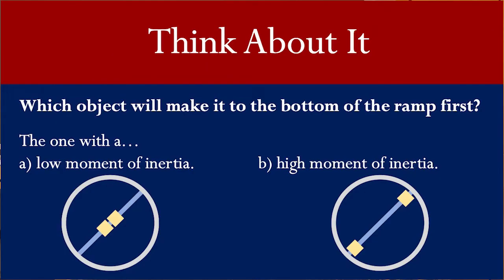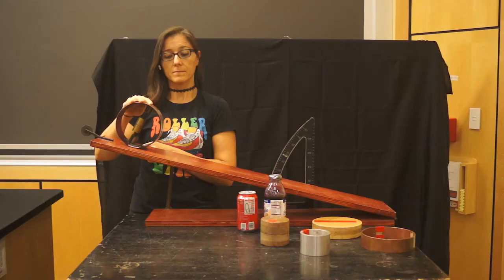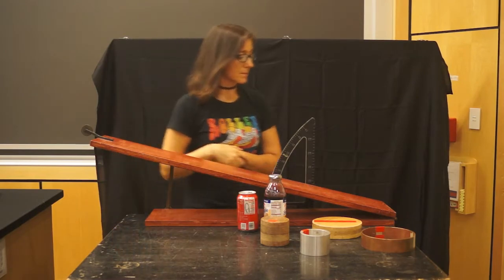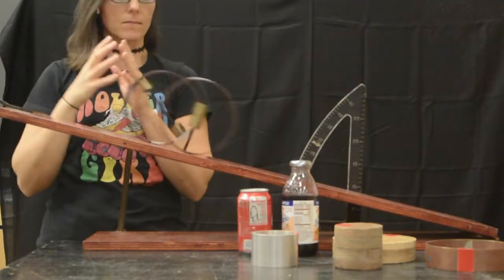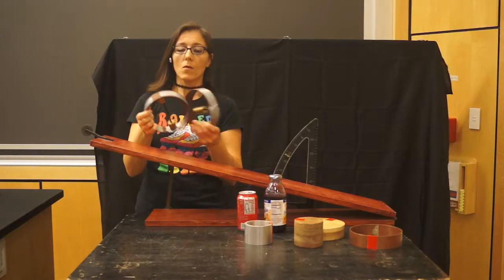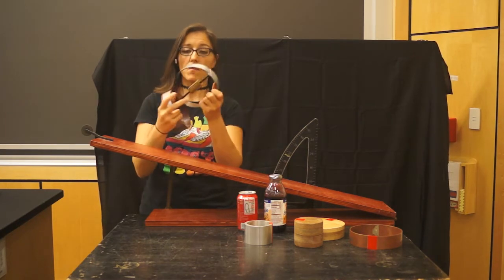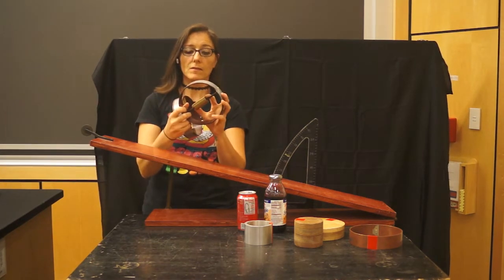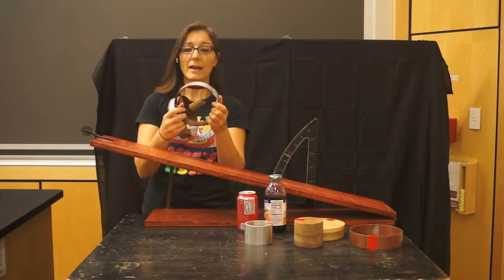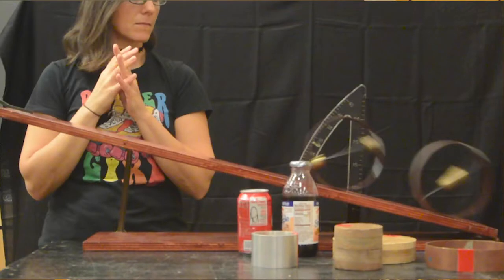Take a moment to think about which one you think will reach the bottom of the ramp first. What we saw was that the object with the mass close to the center was actually able to make it to the base of the ramp faster. Let's take a look at it one more time.